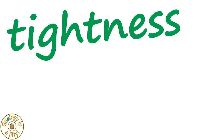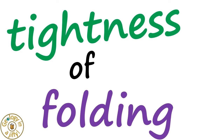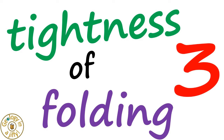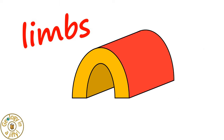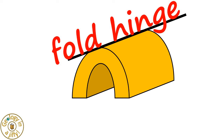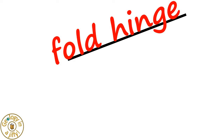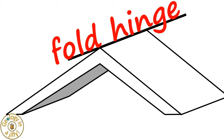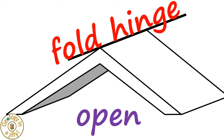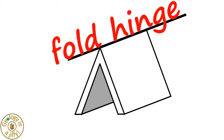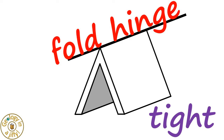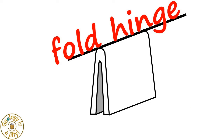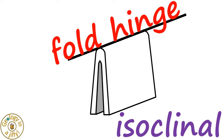We can study the tightness of the folding too, with three basic types which we measure using the relation of the limbs to the fold hinge. If the limbs dip gently away from the hinge, then the fold is open. A fold with limbs that are closer together and dipping steeply is said to be tight, and a fold with near-parallel limbs is said to be isoclinal.